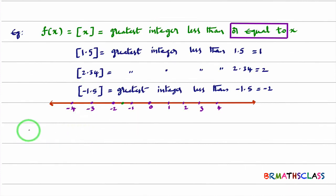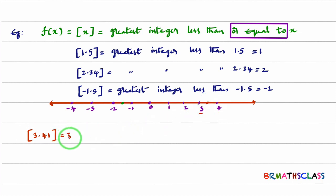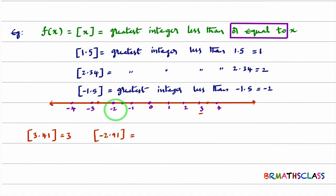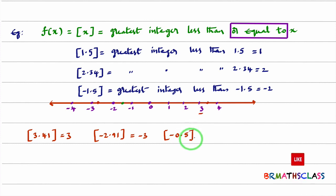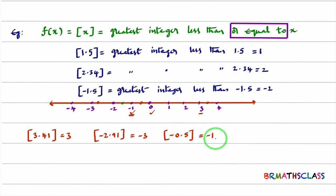A few more examples. Step 3.41: 3.41 is between integers 3 and 4, left side is 3, so step 3.41 is 3. Step minus 2.91: minus 2.91 is between integers minus 3 and minus 2, left side is minus 3, so step minus 2.91 is minus 3. Step minus 0.5: minus 0.5 is between minus 1 and 0, left side is minus 1, so step minus 0.5 is minus 1.